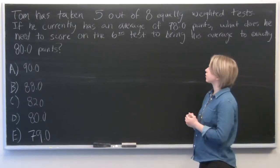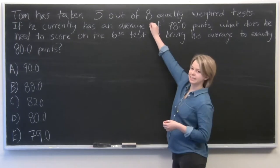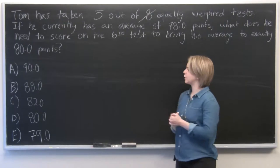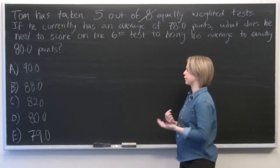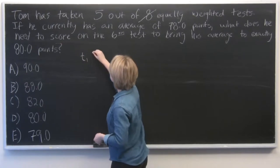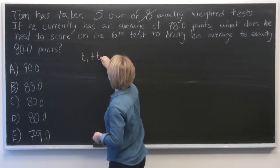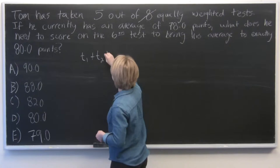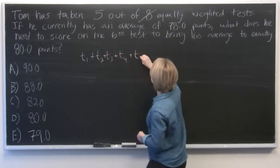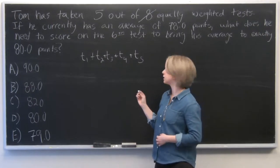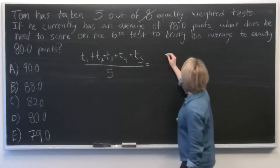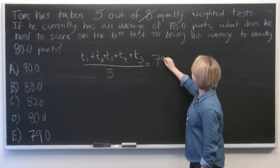The first thing we need to recognize is that eight is extra information. We don't need to know that to solve this problem. The way I'm going to do this is I'm going to set up a fraction. So we've got T1 plus T2 plus T3 plus T4 plus T5 for his first five tests, all of that over five equals the average of 78 points.